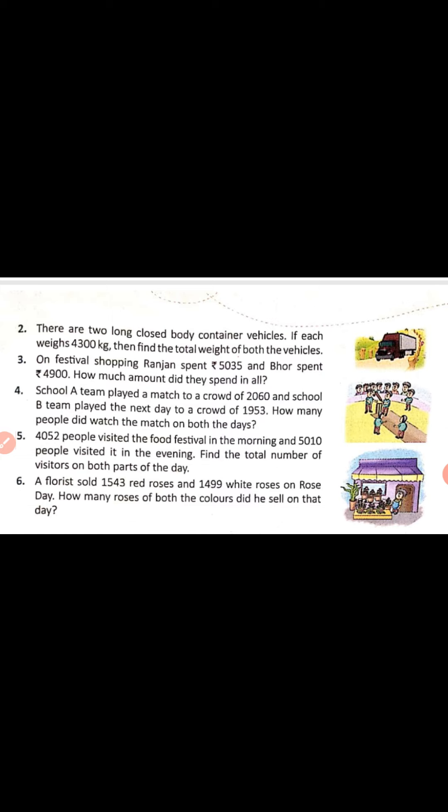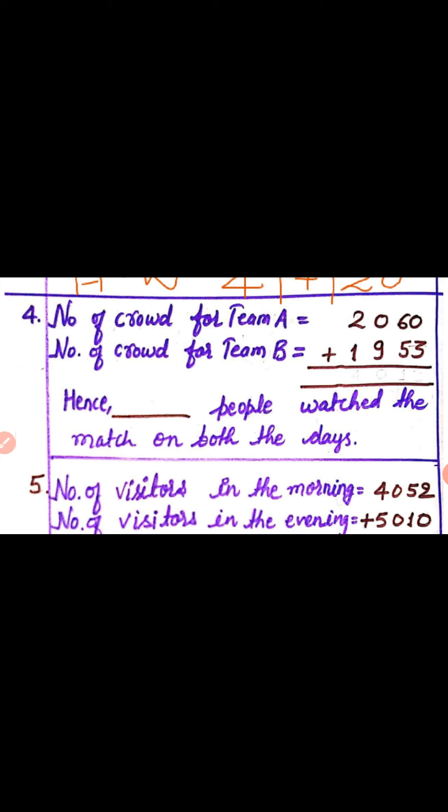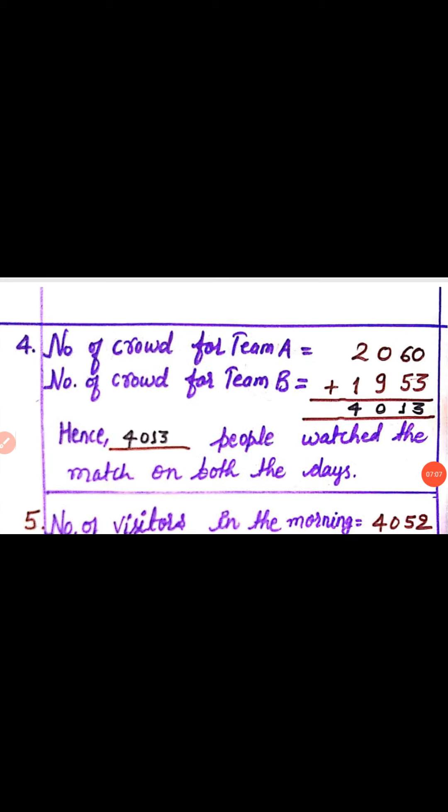Now see question number 4. School A team played a match to a crowd of 2060, and School B team played the next day to a crowd of 1953. We have to find how many people watched the match on both days. Number of crowd for team A is 2060 and number of crowd for team B is 1953. After adding, we get the answer 4013. Hence, 4013 people watched the match on both the days.